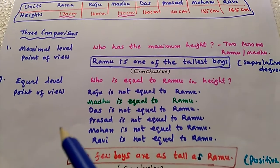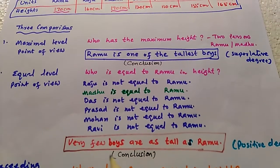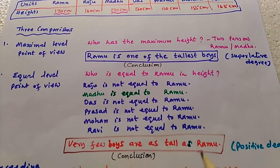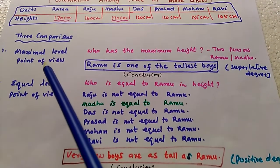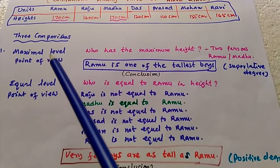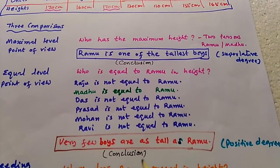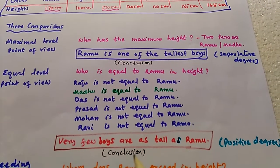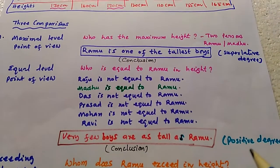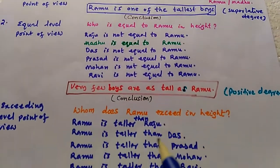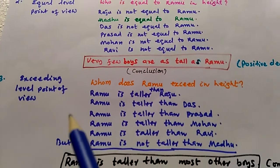From the equal level point of view, we write: very few boys are as tall as Ramu. The boy who is equal to Ramu is Madhu, so we conclude: very few boys are as tall as Ramu. This is called the positive degree.